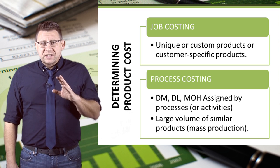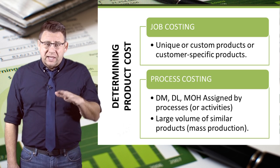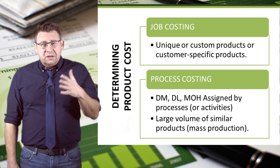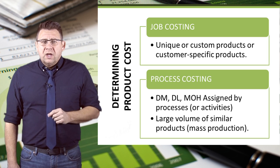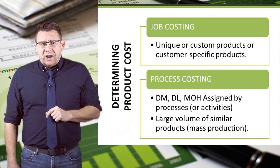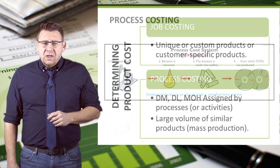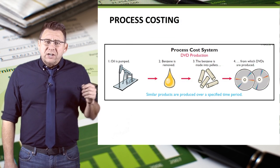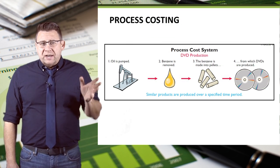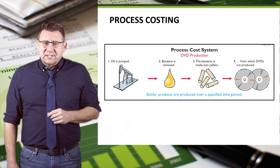If process costing has several activities — like mixing, bottling, and packaging — costs are added at various times throughout those activities. This slide graphically shows an item that tends to be process costed.